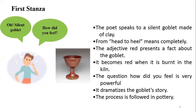The poet speaks to the goblet: 'O silent goblet, how did you feel?' It becomes red. Why? Because it is burnt in the kiln. This process is followed in pottery. The potter's job is making a goblet out of clay, and the final product is the goblet. We can compare the same thing as a mother giving birth to a child — pain is there, but at the end the mother is happy. But here the goblet is not happy.